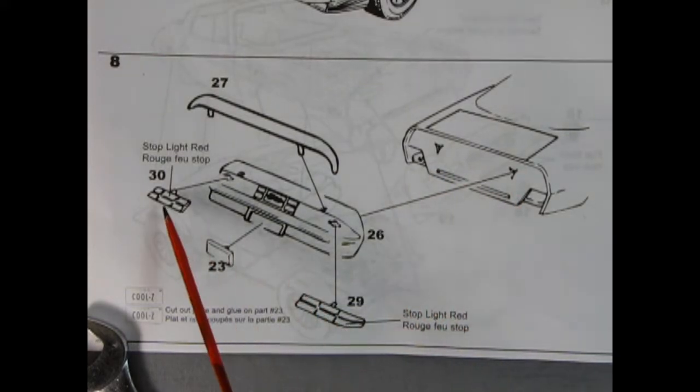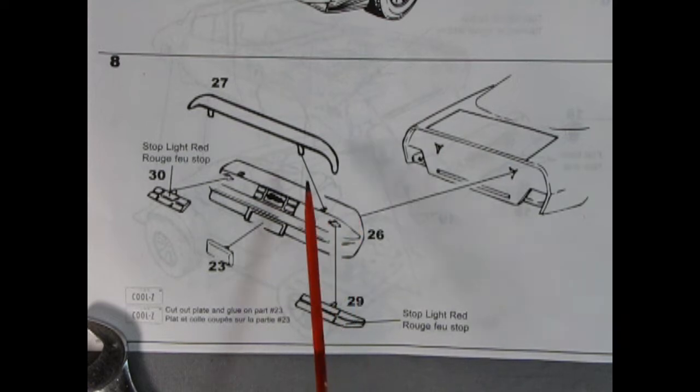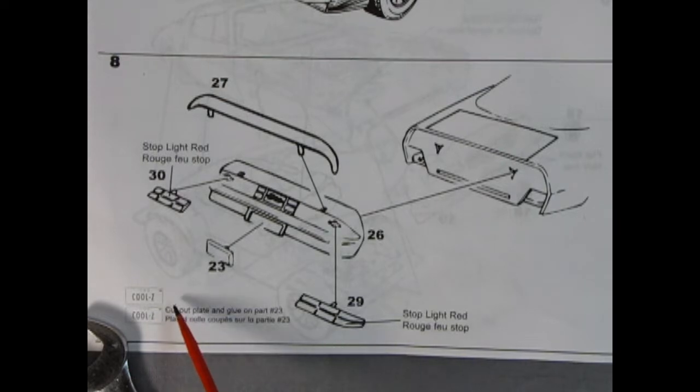Then we've got our rear tail lamps which you'll have to paint a little stoplight red. Just have a good look at a real Camaro photo and you'll see what I mean. Then we've got our rear spoiler being put in place and then our license plates going on. And here it says cut out plate and glue on part number 23 and it looks like it is a cool Z from Iowa.